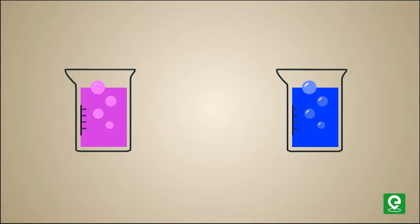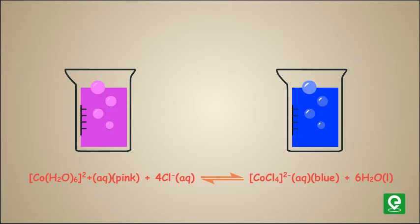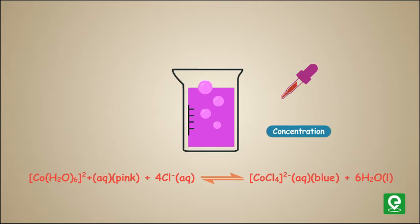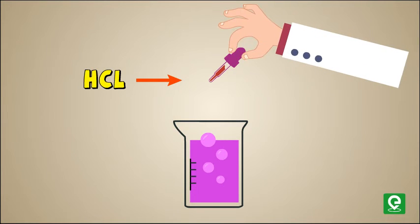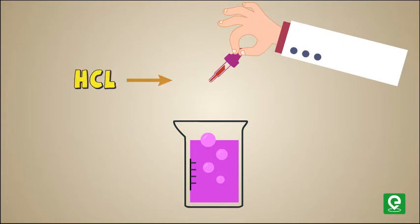For example, two different colored cobalt complex ions, Co(H2O)6 2+ and CoCl4 2-, exist together in equilibrium in an aqueous solution in the presence of chloride ions. This equilibrium can be disturbed by changing the chloride ion concentration or changing temperature. If you increase concentration of chloride ions by adding more HCl, more products will be formed and solution will turn blue.